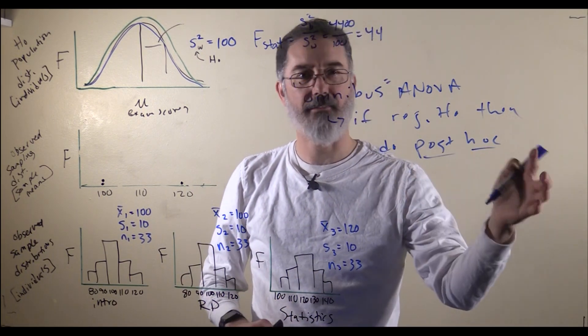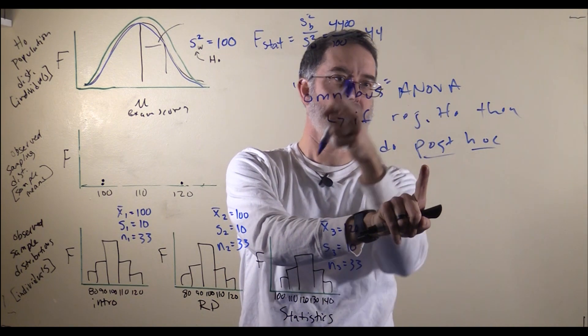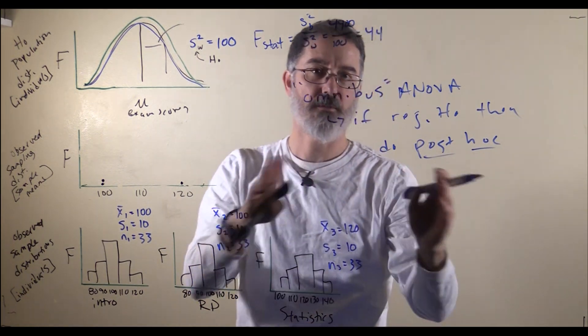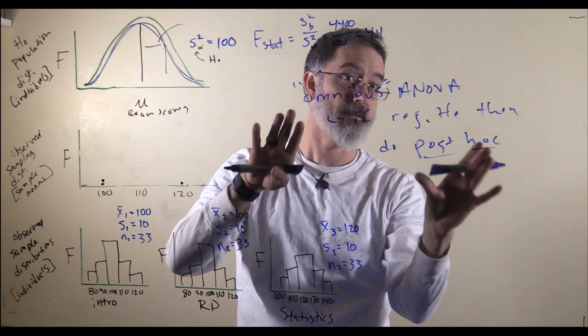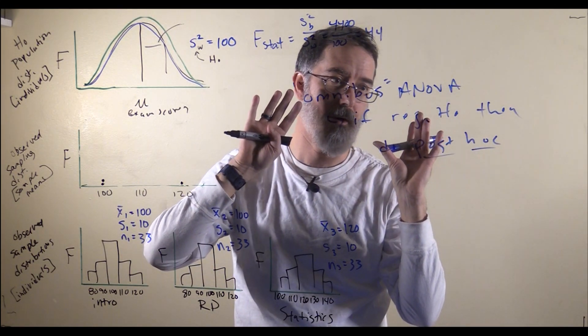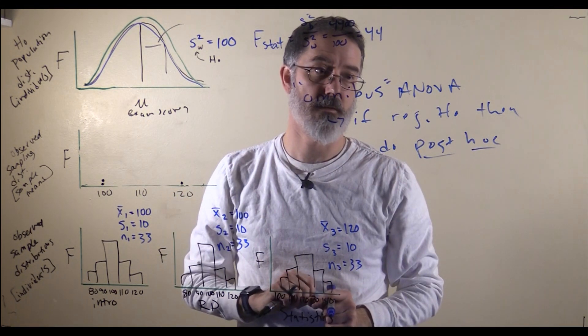only then you can do the post-hoc test, which will tell you which means are different from one another. Post-hoc means after the fact. After the overall ANOVA is significant, then you will do those pair-wise comparisons. By using this strategy, it keeps the overall alpha rate at .05 like you want it to be.